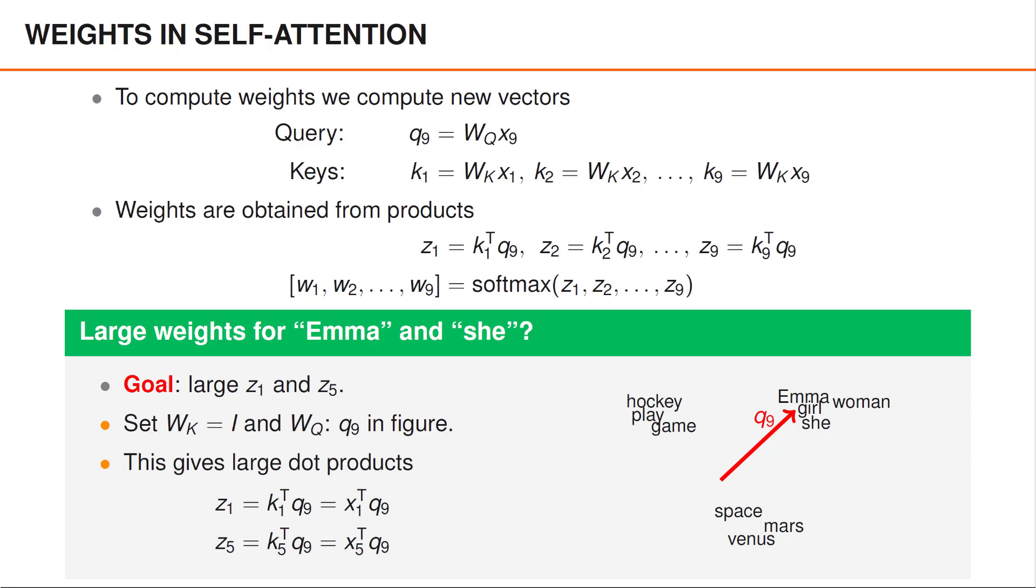Naturally, since Q9 is now essentially pointing in the same direction as the word embeddings X1 and X5, this would give a large inner product and thus large values for Z1 and Z5.